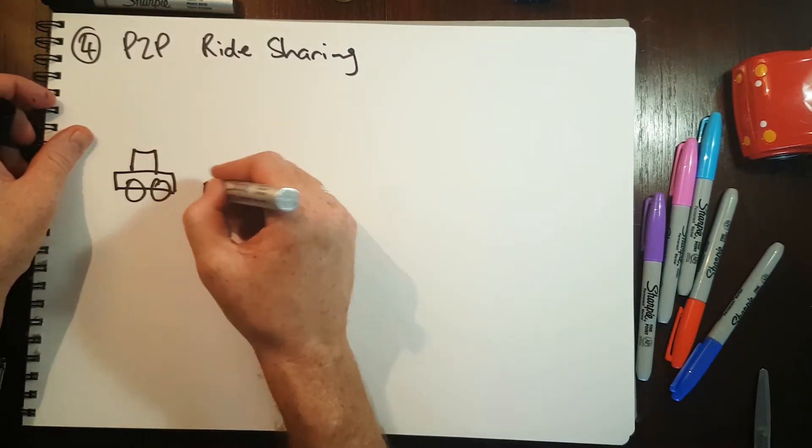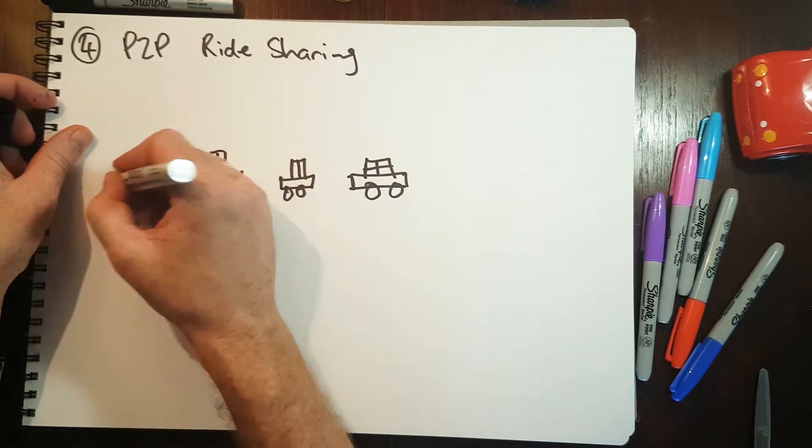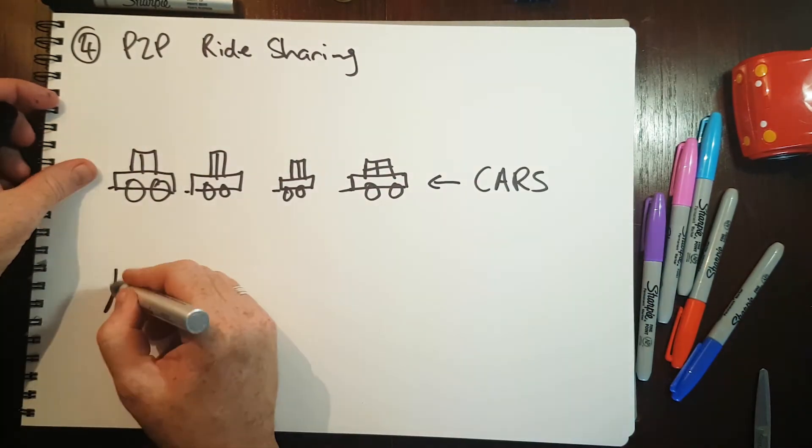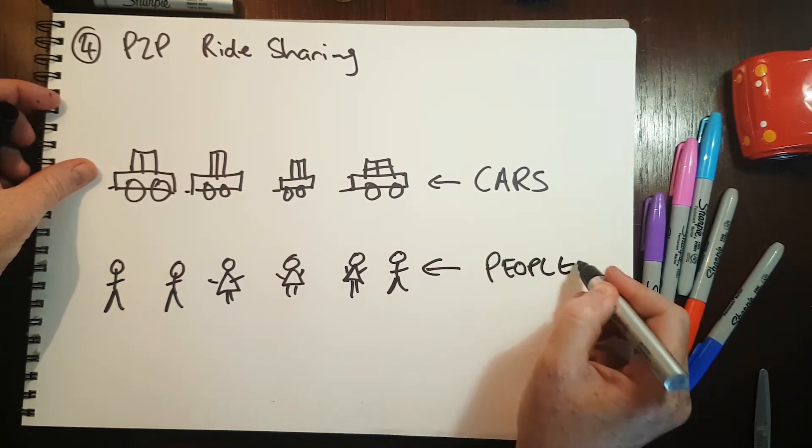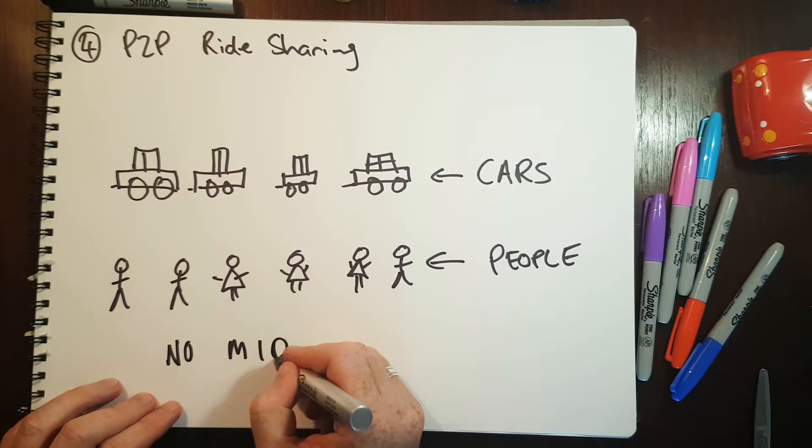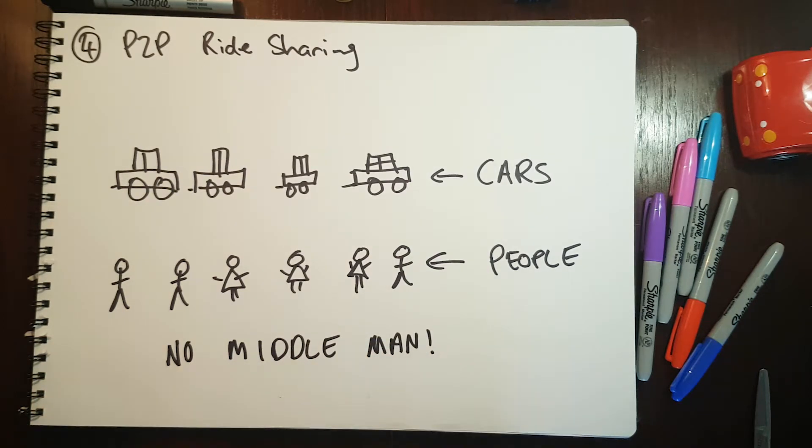Blockchain can also be used to create a decentralized version of peer-to-peer ride-sharing networks like Uber but without the Uber. Only riders and drivers involved. This reduces the cost of ride-sharing. Startups such as Arcade City have already created this.